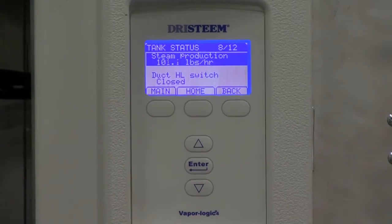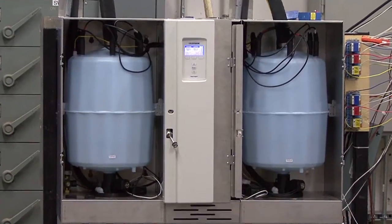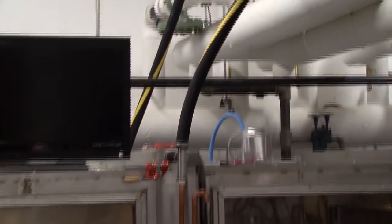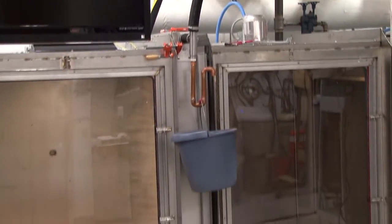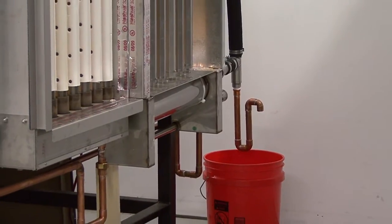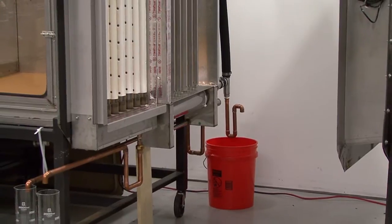Each dispersion assembly is receiving 50 pounds per hour of steam from a dual tank humidifier operating at 100 pounds per hour. Steam hose run lengths from the humidifier to each dispersion assembly are equal. Drip tees at each steam delivery header ensure that no steam hose generated condensate enters the dispersion assemblies.